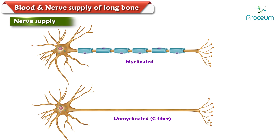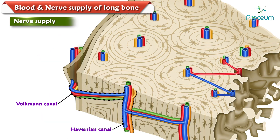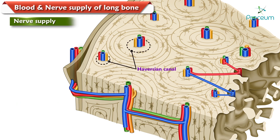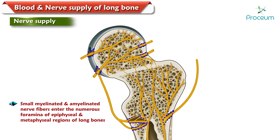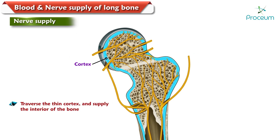The nerve supply of a long bone: bone tissue is innervated by both myelinated and unmyelinated (or C fibers) sensory neurons. Volkmann's canals are channels that assist with blood and nerve supply from the periosteum to the Haversian canal. A Haversian canal generally contains one or two capillaries and nerve fibers.